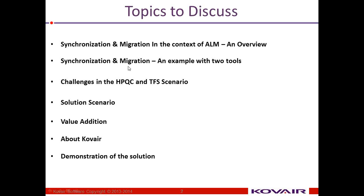Next, we'll go into synchronization and migration, giving an example of how you do synchronization and migration by taking two tools as an example. Then we'll discuss the different challenges that we come across while doing synchronization and migration using HPQC and TFS as a scenario. Then we'll discuss the solution — how we overcome these challenges in synchronizing and migrating artifacts from HPQC to TFS and Tversa. Then we'll discuss the value addition and benefits of this solution, a brief about what is Covair and what it does, and finally a demonstration of the solution.